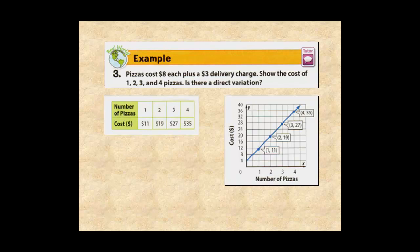Also, the ratio of cost to the number of pizzas is not constant, so it's not a direct variation. Finally, the line doesn't pass through the origin, so it's not a direct variation.